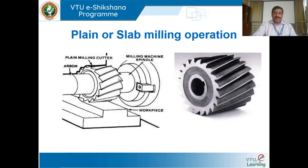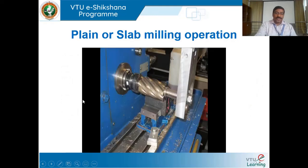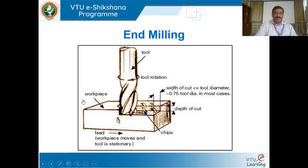Regarding plane milling: if the cutter axis is parallel to the workpiece and the cutter is mounted in the arbor, and when the workpiece is moved against or in the direction of the milling cutter, that is known as slab milling. This is the amount of material removed.